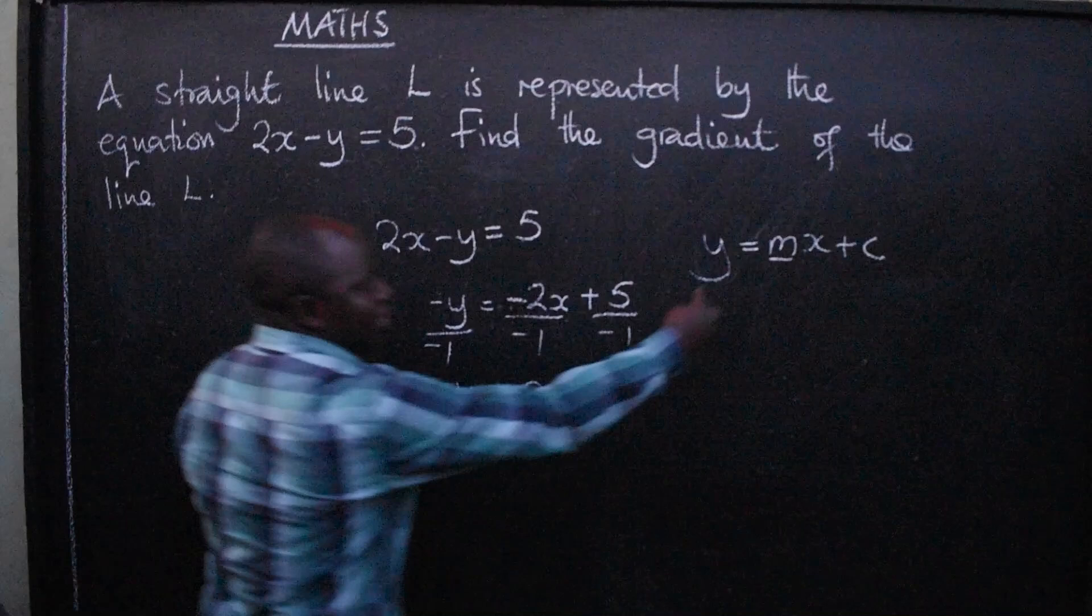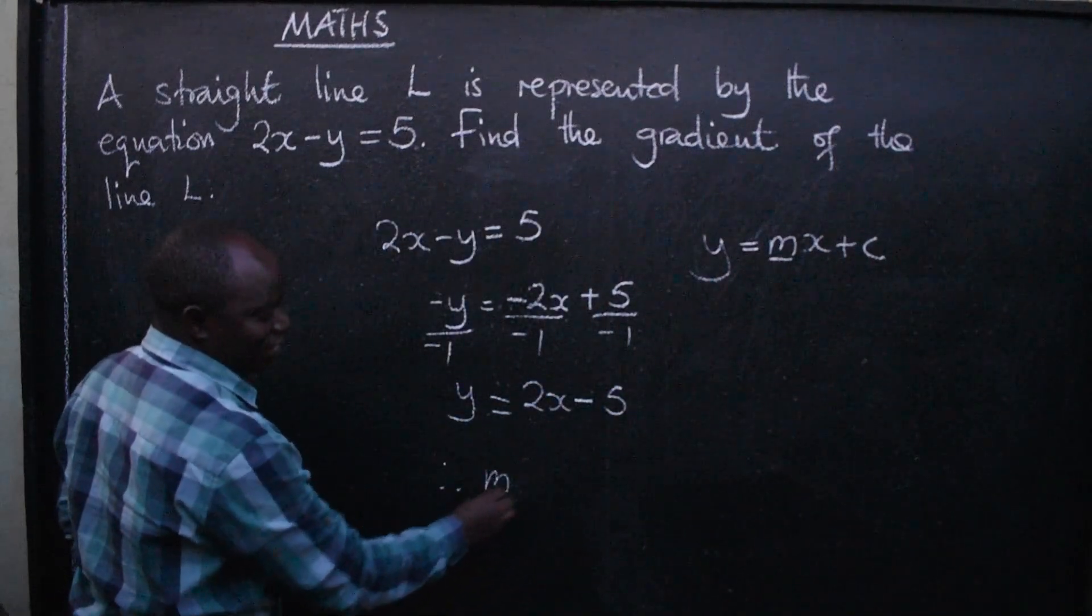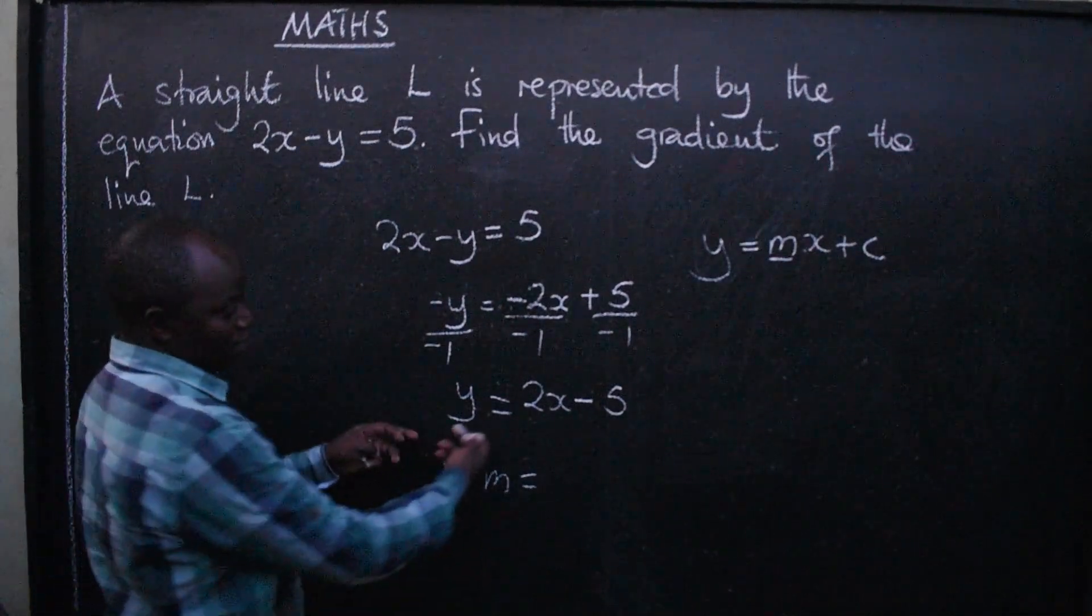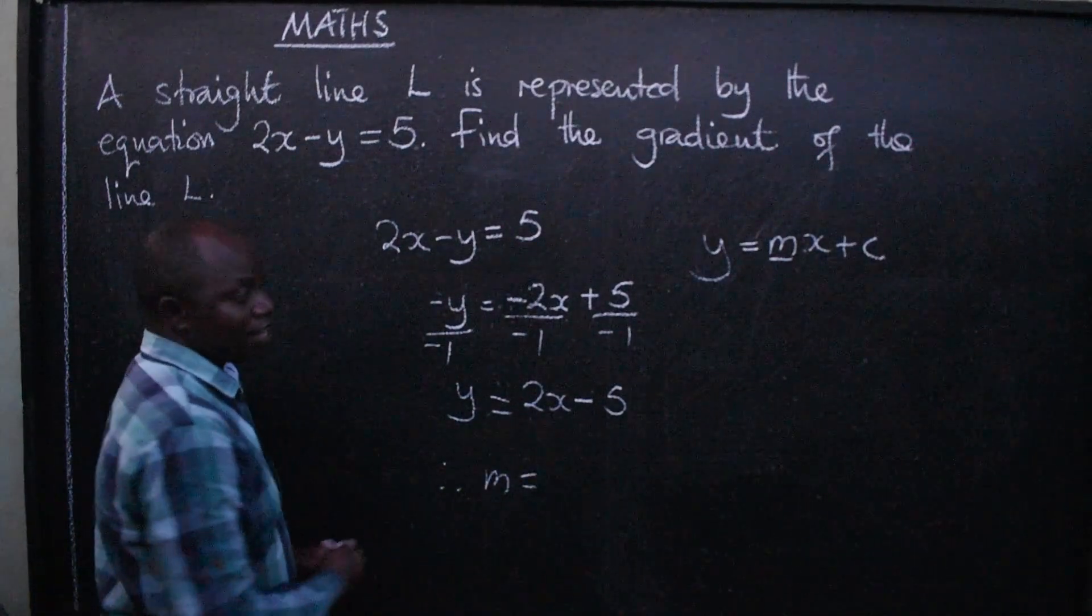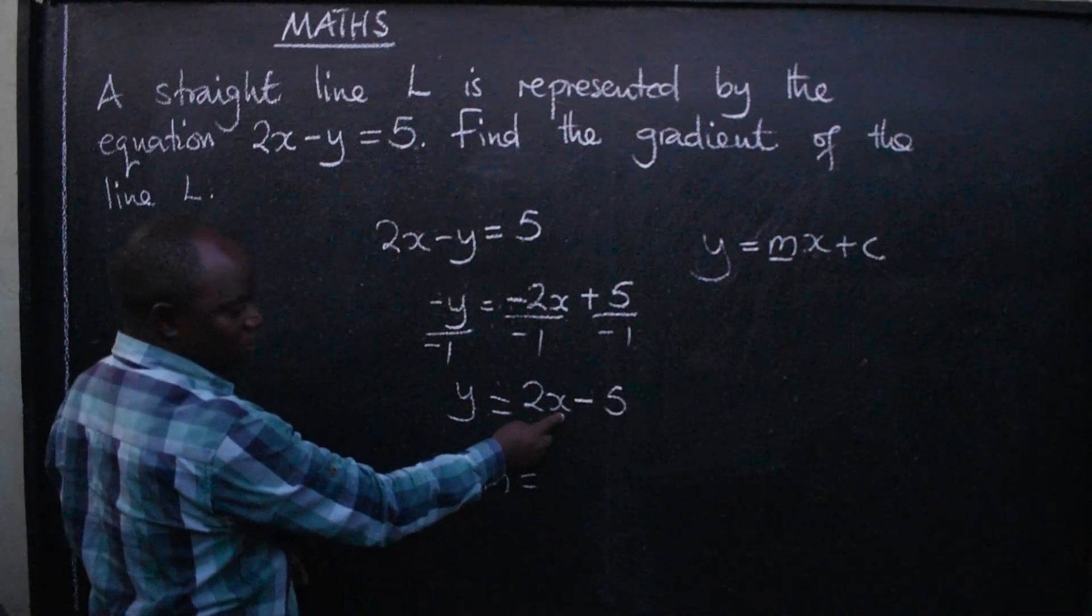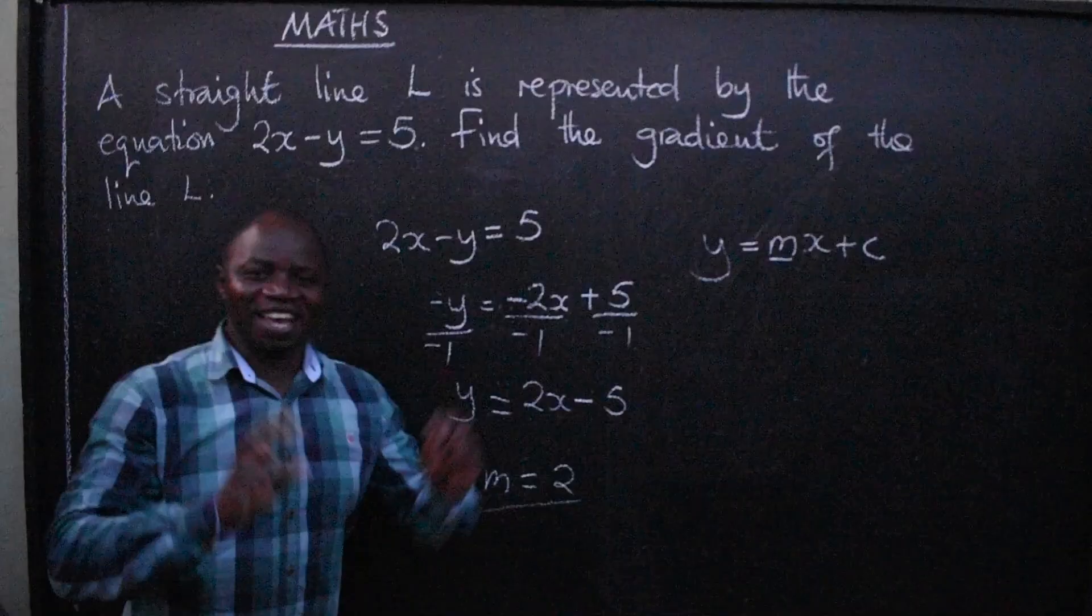It is now in this form. Therefore, what is the gradient? Tell me, what is the gradient from this equation? The coefficient of what? X. In this case, coefficient of x is 2. It's the gradient. Bye-bye.